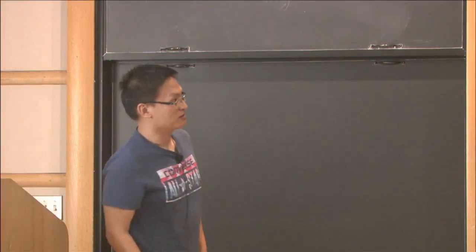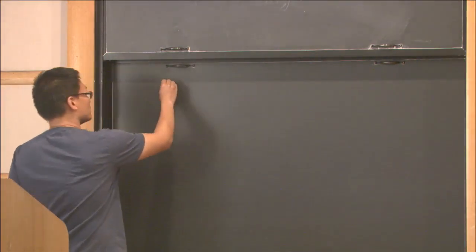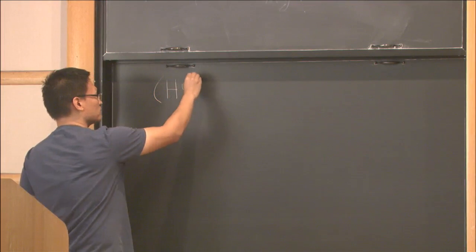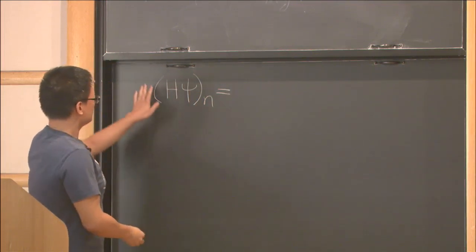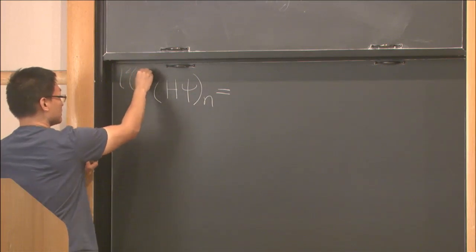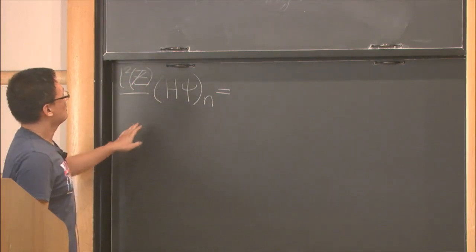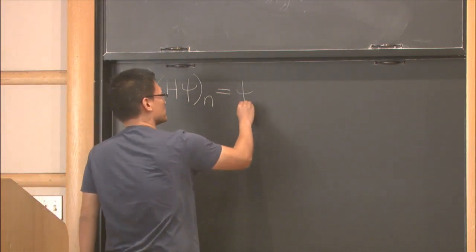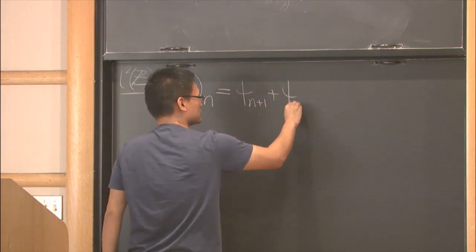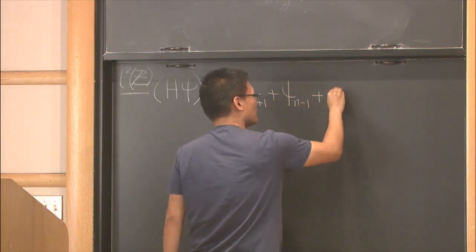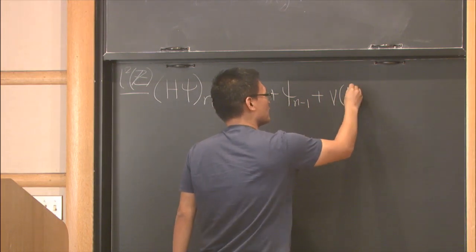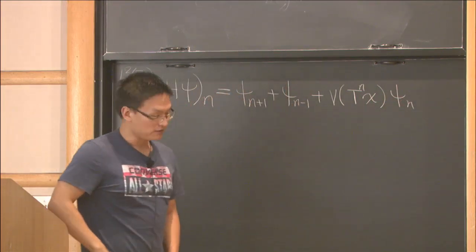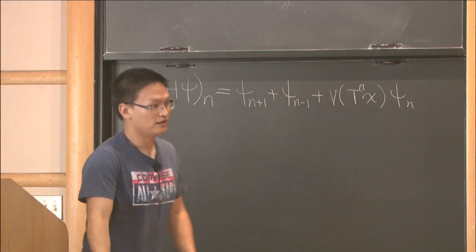Let me start with a Schrödinger operator, the definition. Today we will talk about a one-dimensional Schrödinger operator in this form. So this H acting on L² of Z, and x on a vector ψ as follows: ψ_n+1 + ψ_n-1 plus here we have a function v evaluated at T^n x.